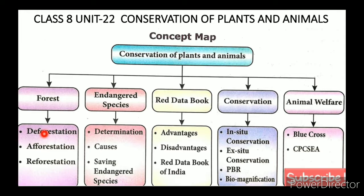The nine topics are: First, Deforestation. Second, Afforestation. Third, Reforestation. Fourth, Endangered Species. Fifth, Red Data Book. Sixth, Conservation. Seventh, PBR — People's Biodiversity Register. Eighth, Biomagnification. Ninth, Animal Welfare.